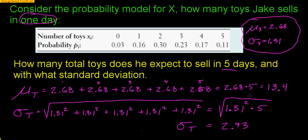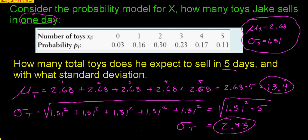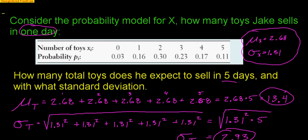Over the course of five days, Jake expects to sell 13.4 total toys, and 2.93 is how that number of toys might deviate. That explains the idea of multiple random variables — day one, day two, day three, day four, day five.